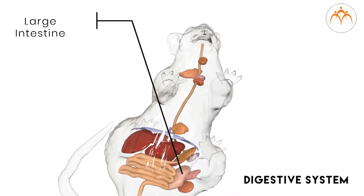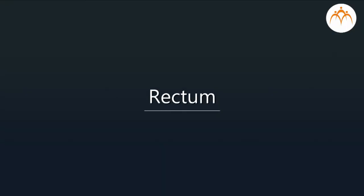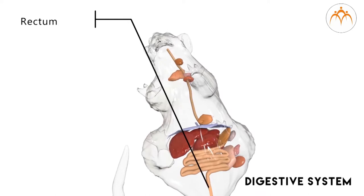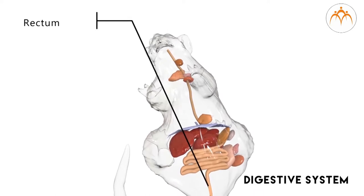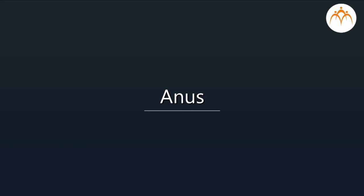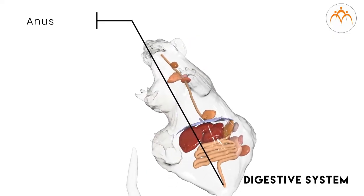The large intestine shows parts like the cecum and colon. The cecum is a small bag-like pouch that has special bacteria to digest plant material eaten by the rat. Digested food moves to the colon, where water and mineral ions are reabsorbed into the blood because they are needed by the body. The rectum is the part that stores waste or undigested food, and the anus is the posterior opening to remove undigested food.